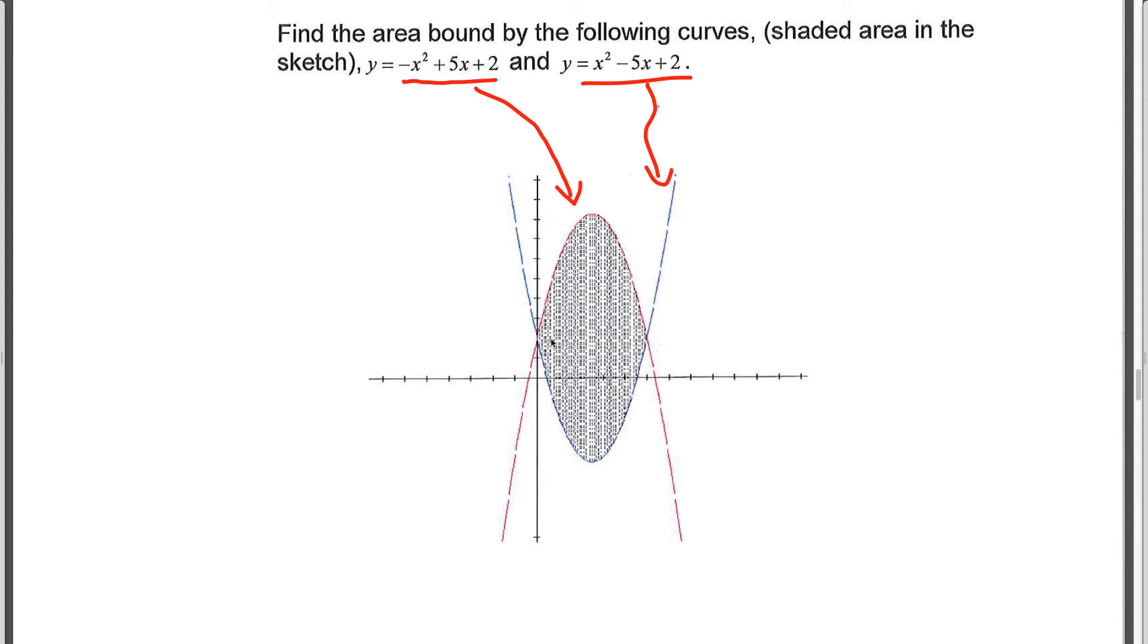And if we think about the area, we want to draw our representative rectangle. And if we draw a horizontal rectangle here, we're going to touch the red curve twice, or the blue curve twice. And that's not going to be very effective. So we want to draw a dx rectangle, or a vertical rectangle. And that means that we have the top is the red curve, or this first function, and the bottom is going to be the blue curve, or this second function.